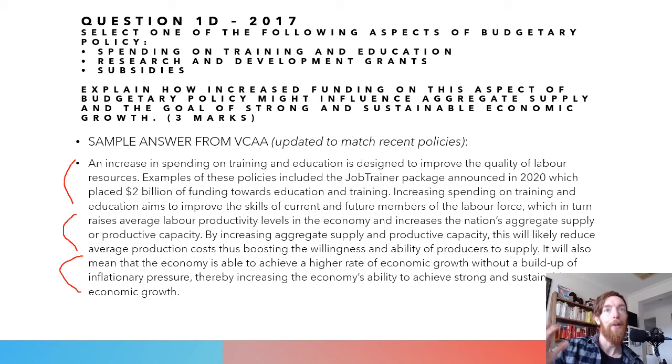I always tend to define the goal as well — strong sustainable economic growth is the highest growth rate possible without running into unnecessary inflationary, external, or environmental pressures, at a rate of 3 to 3.5% GDP growth per year. I prefer to include it because I feel it gives a stronger answer.